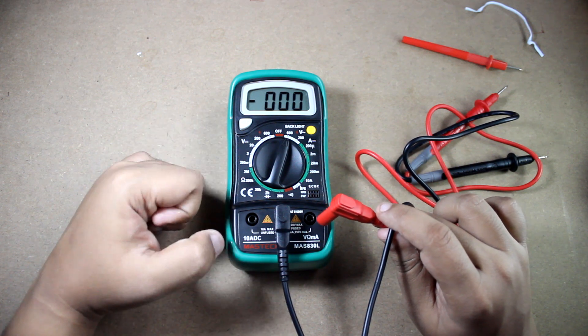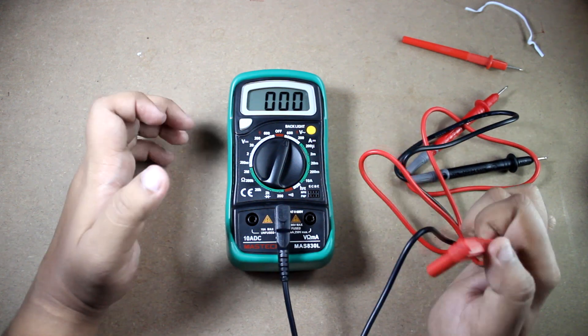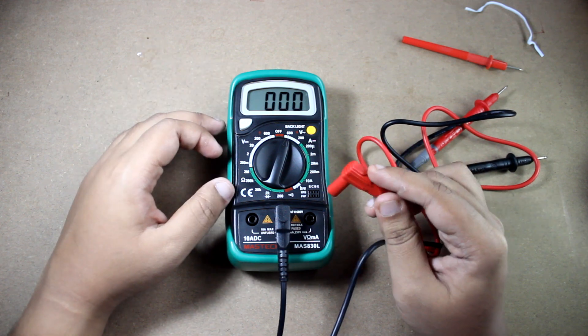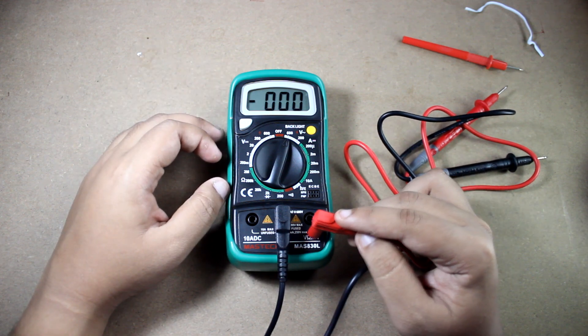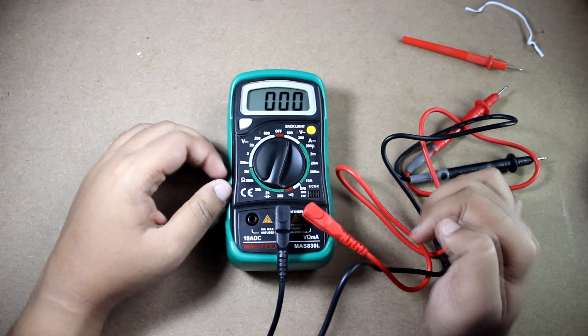Don't put the red probe at 10 ADC, that is unfused. If you put this probe here and check the reading, your mains will be short and it will be a disaster for the appliances. So let's put this in the V ohm milliamp terminal, done.